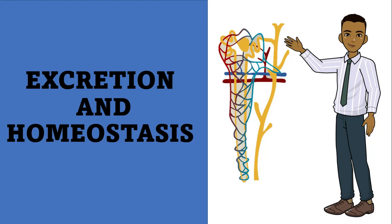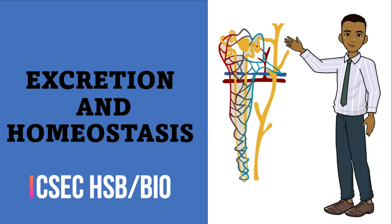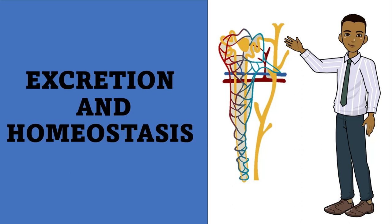In today's class, we're going to be looking at excretion and homeostasis. We will be looking at what excretion is, making a distinction between excretion and ejection. Then we're going to hop into the importance of excretion, identify parts of the kidney, label these parts and outline the function of each. We will then move into a diagram of the skin, labeling it and outlining the function of each labeled part.